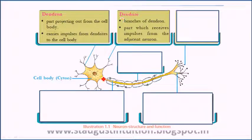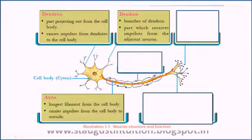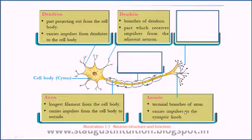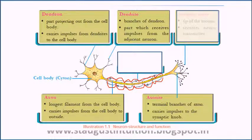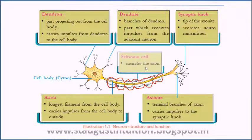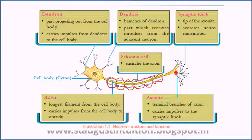Now, what else do we have here? From the neuron, the long extension is called the Axon. The axon has branches at the end called axon terminals. In this axon, the signal is released. The axon has a coating — we call these Schwann cells. Schwann cells form a protective coating on the axon. The tip of the axon terminal is called the synaptic knob.